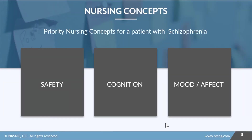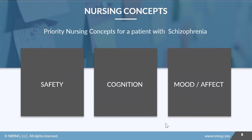The primary nursing concepts for a patient with schizophrenia are going to be safety — number one, always — especially with paranoid delusions, which we'll talk about in the next lesson. Cognition, because they may experience some disorganized thoughts. And mood and affect, because some of those negative symptoms will affect their emotions and we may need to do a self-harm assessment.